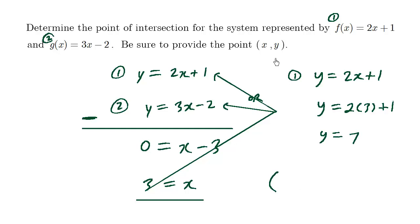So our ordered pair, x comma y, is going to be 3 comma 7. This here is the solution to these two different lines. It is the point of intersection.